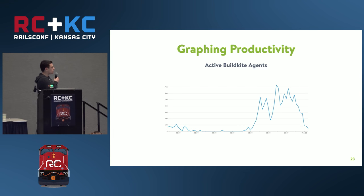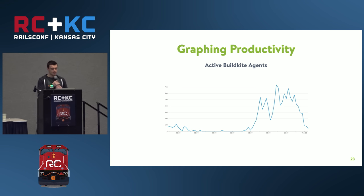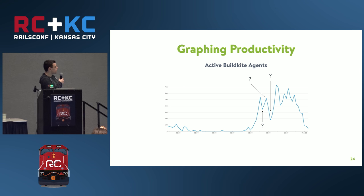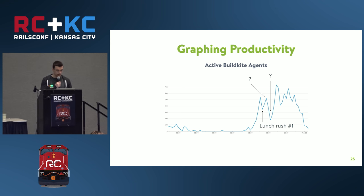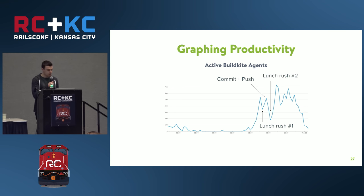Buildkite agents are an implicit measure of developer productivity — when you're pushing more code, you're more productive. Looking at a graph from an average day, there are two valleys and one peak. The first canyon corresponds to the lunch rush at Shopify (11:30 to 1:30 in UTC). The peak just before it is developers committing work-in-progress and pushing to GitHub right before heading to lunch, and then the big dip is everybody going for lunch.